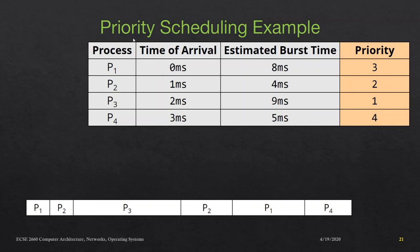In this part we will look at priority scheduling algorithm and the round robin scheduling algorithm. Priority scheduling can be of two types: preemptive or non-preemptive. The example we are working on here is of preemptive type, so we are looking at a Preemptive Priority Scheduling (PPS) algorithm.